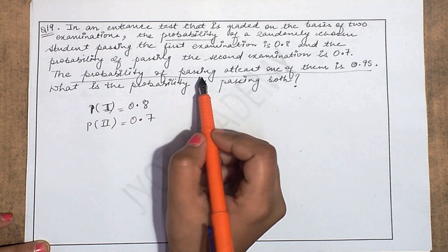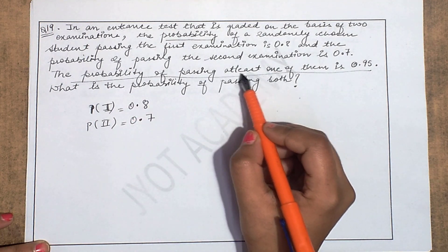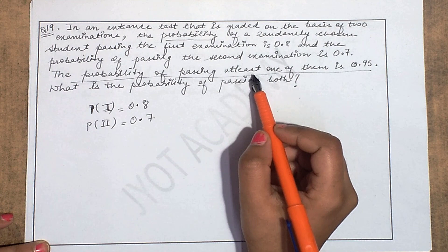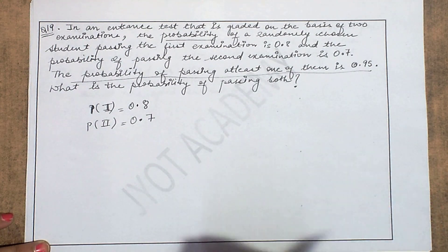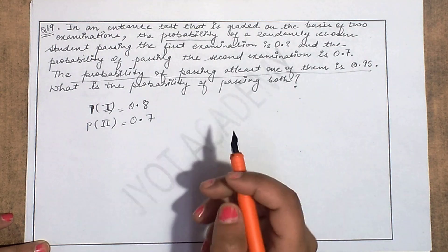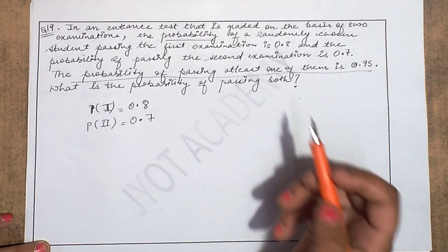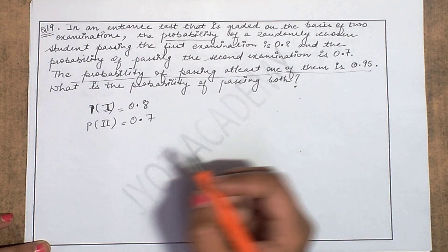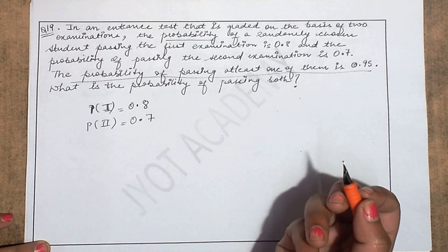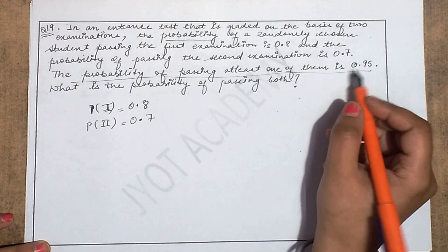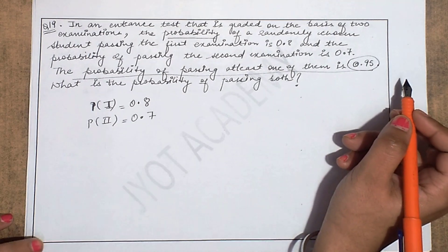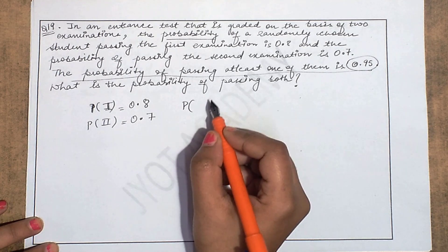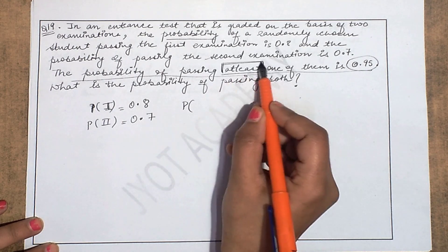What is the probability of passing at least one exam? 'At least' means kum se kum — a minimum of one exam they can pass, or even more than one is fine. So the probability given to us covers passing one or more exams. The maximum here is both exams — there are only two exams — so passing both exams has probability up to 0.95.